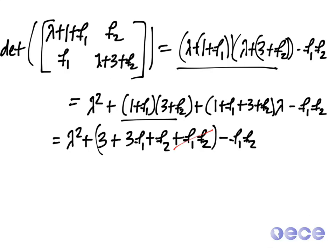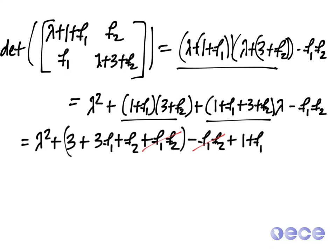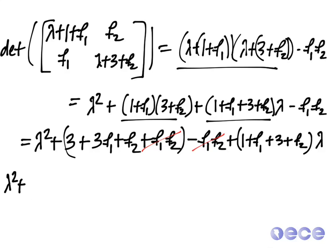So it turns out that after we multiply this little bit together here, we get lambda squared plus 3 plus 3f1 plus f2 plus f1 f2 minus f1 f2 from here. So my f1 and f2s are going to cancel one another out, plus this quantity here, 1 plus f1. 1 plus f1 plus 3 plus f2 times lambda. So now I'm going to isolate these pieces by lambda. So lambda squared plus 1 plus f1 plus 3 plus f2. I can write this as f1 plus f2 plus 4 times lambda. And now I can add this to the non-lambda term, 3f1 plus f2 plus 3.